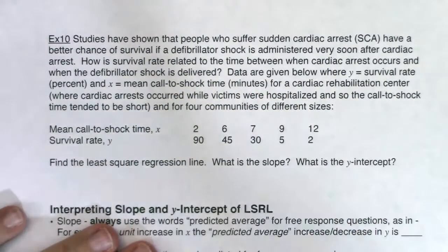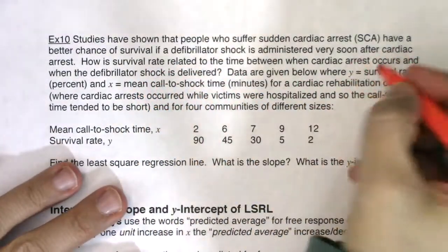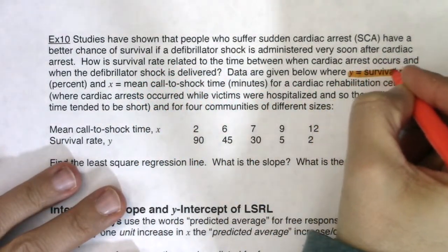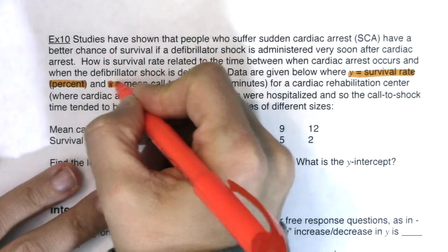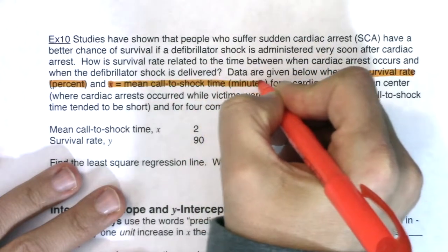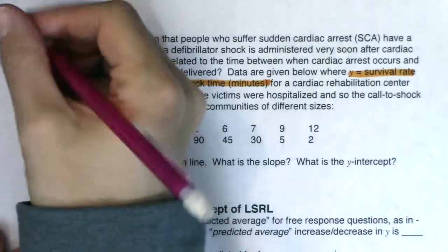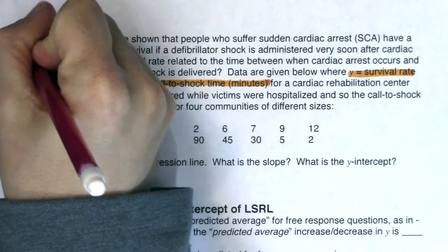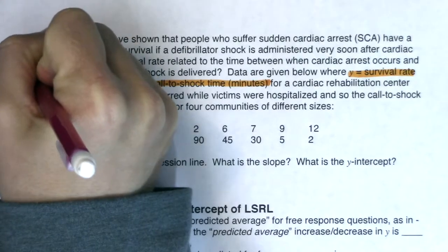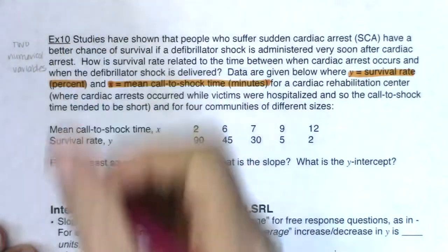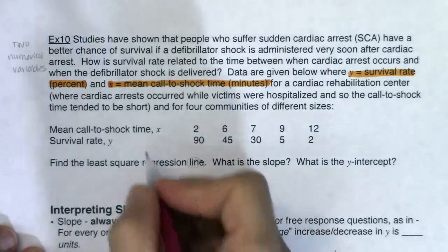Zooming out: we have two numerical variables. Survival rate in percent is our y, and average call-to-shock time in minutes is our x. With two numerical variables, we know we're in a Chapter 12 problem. The question asks us to find the least squares regression line — the LSRL — which is our predicting equation.